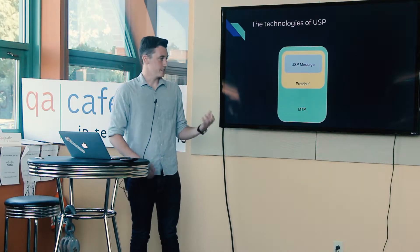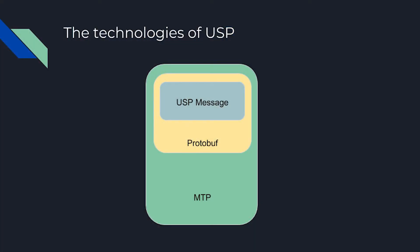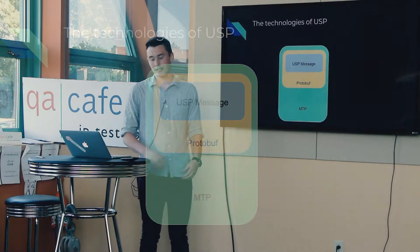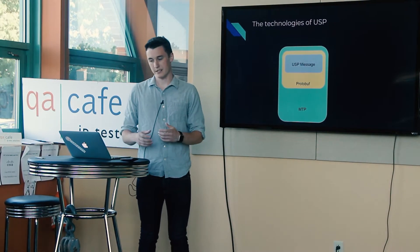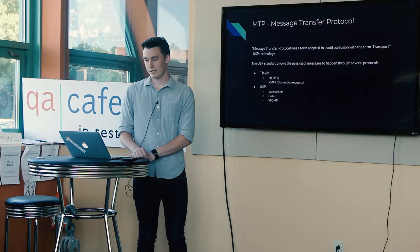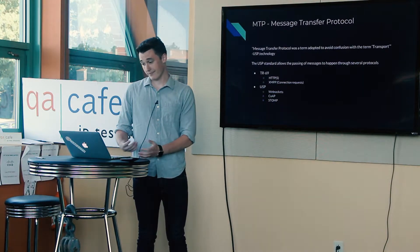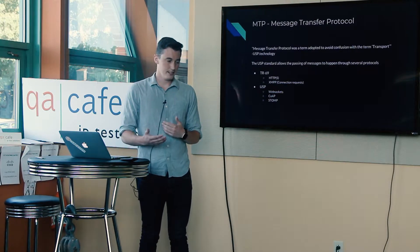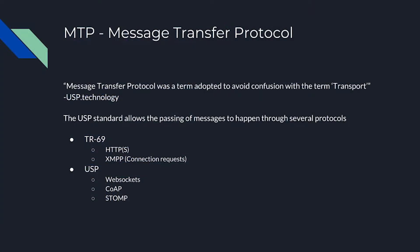So what are the technologies of USP? At the bottom is the MTP, or Message Transport Protocol. Inside that is protobuf, and inside that is the real USP message. The MTP is the equivalent of HTTP in TR69 — it's how you actually exchange things. With TR69 you can do HTTP or HTTPS, and they added an XMPP connection request mechanism.